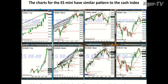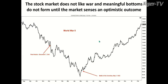When I take a look at the charts for the ES Mini as well as the S&P — at the top I've got the S&P charts we looked at — we've got the same patterns going on inside of the ES Mini. The ES Mini provides us with profile levels, which give us additional support or resistance areas. Another element adding to the bearishness: the stock market does not like war, and meaningful bottoms typically do not form until there's some sense of an optimistic outcome. This is showing the World War II cycle, but we can go through every single war cycle and it really does the same thing.